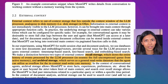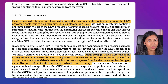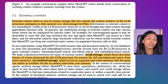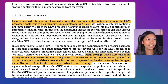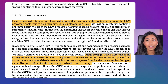External context refers to out-of-context storage that lies outside the context window of the large language model processor and is very similar to disk memory in operating systems. Information stored in external context is not immediately visible to the large language model processor; however, it can be brought into main context through appropriate function calls. In practice, external context can take many different forms configured for specific tasks — for chatbots, for example, it makes sense to store the full conversation in external context rather than keeping it in main context.